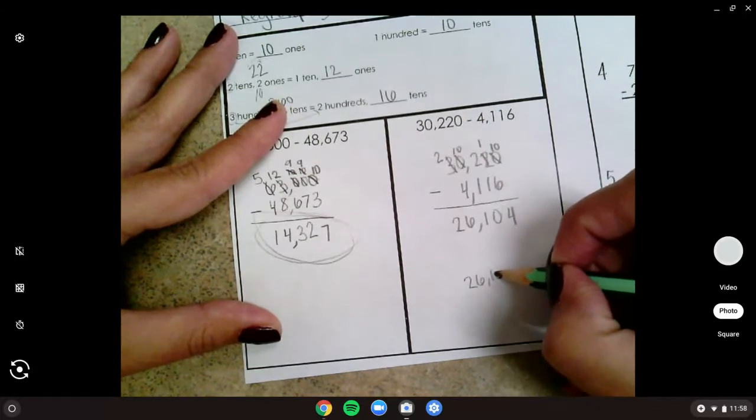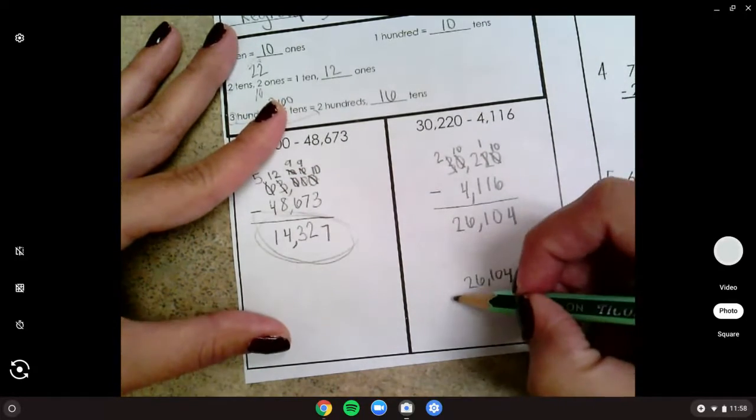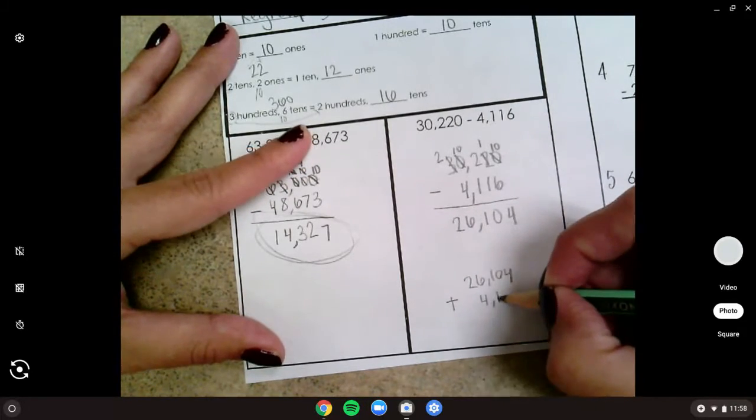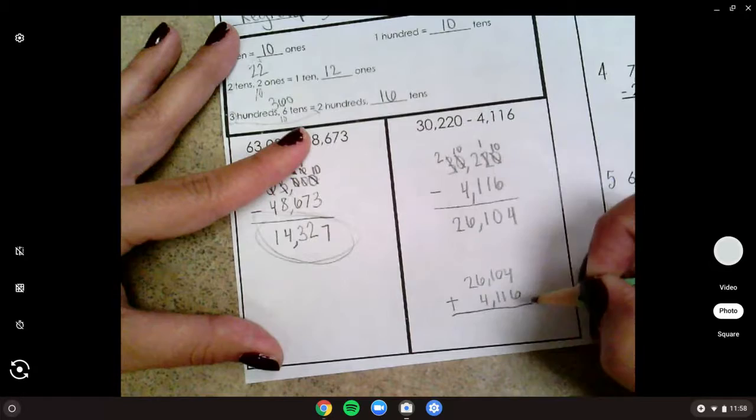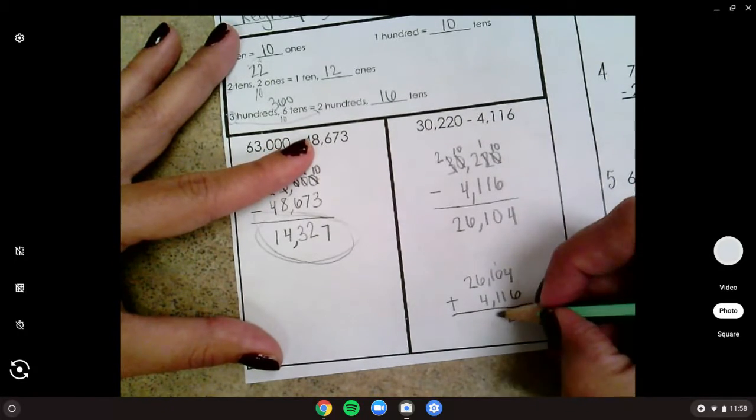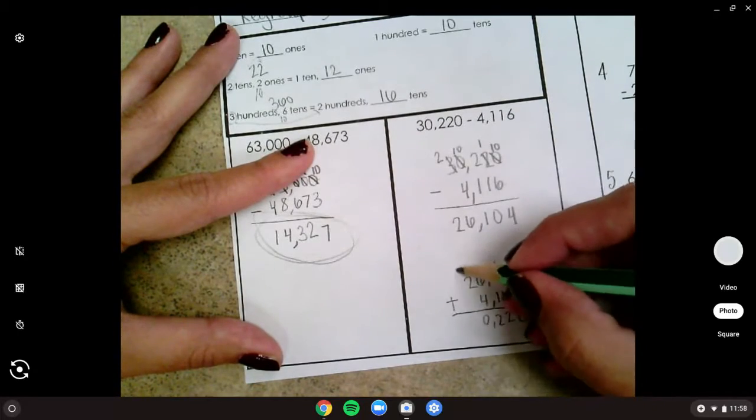Remember, I can always do the inverse to double check my work too, just in case I feel like that wasn't right. And I'm going to pick the 4,116 to add back in. Six plus four is ten. That's two. Six plus four is ten.